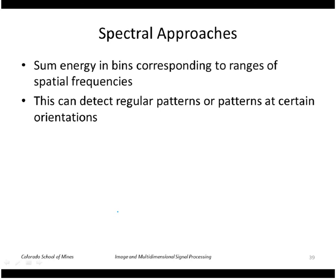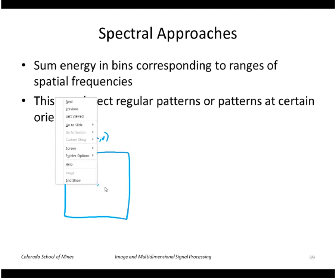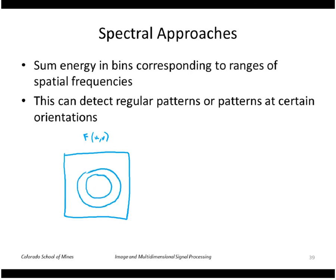The idea here is that we take the Fourier transform of the image and then we look at the intensities of the spectrum in different bins. One way is, if this is the Fourier transform F(u,v), and that's the zero point right there, we could look at the energy in a ring spaced at a distance r from that origin.